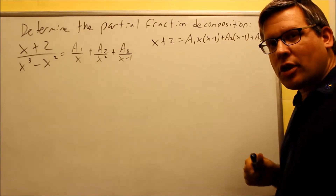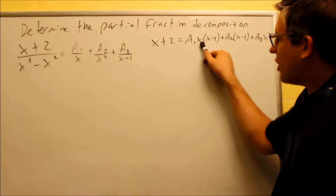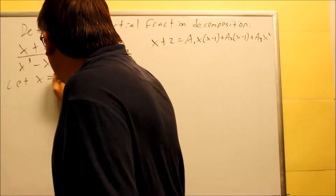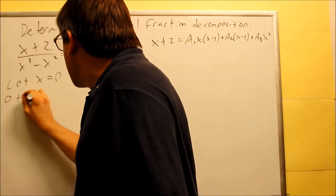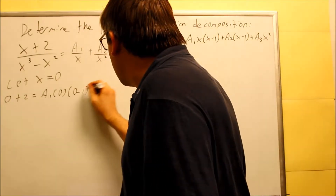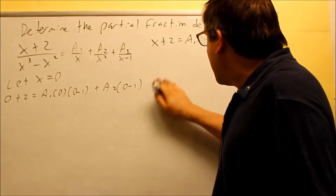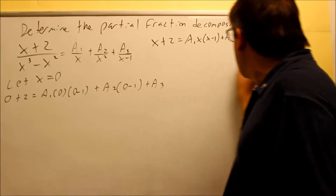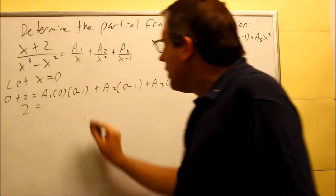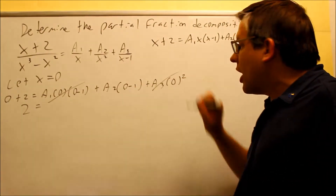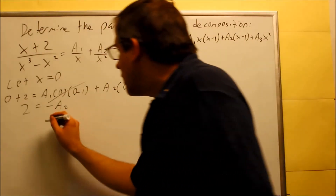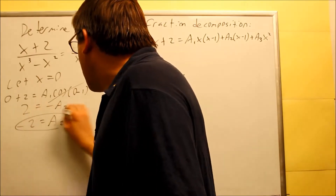Here's the equation we just came up with, and now we're going to start putting in convenient values. The first value is x equals zero, because there's an x sitting by itself, so zero will cancel out two terms. Putting zero in on both sides: zero plus two equals a1 times zero times zero minus 1, plus a2 times zero minus 1, plus a3 times zero squared. Everything with a zero cancels, and I end up with two equals negative one times a2, so a2 equals negative two.